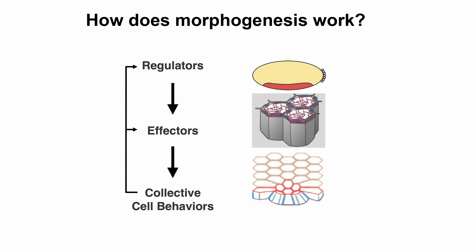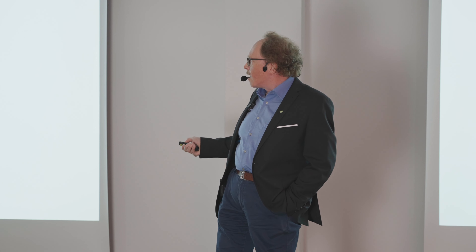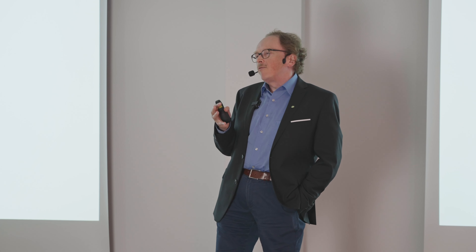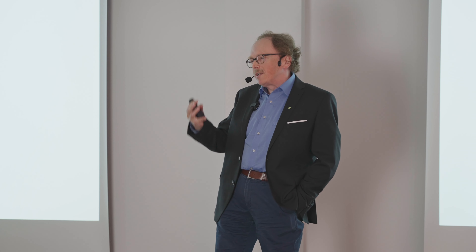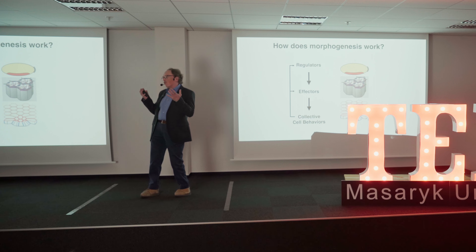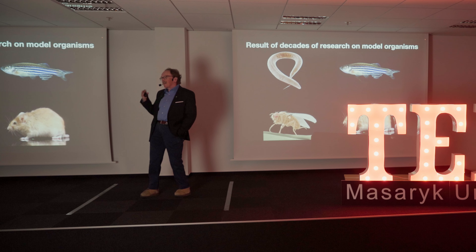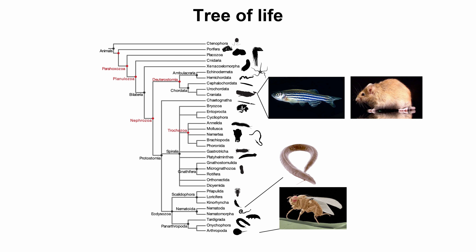What do we know at this point about how morphogenesis works? There is decades of research which tells us that in the embryo some specific molecules, which are regulators, single out groups of cells. By themselves they cannot do anything, but they can affect effectors — proteins which can make cells change their shapes. If this is coordinated across many cells, you get the formation of shapes such as invagination. This knowledge comes from studying our model organisms, which are very powerful. We have many tools to study them. However, they give us a very limited picture of the diversity of the formation of shape.